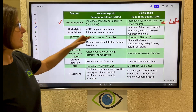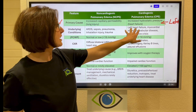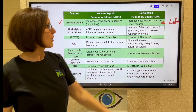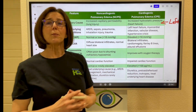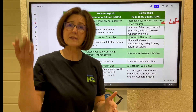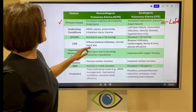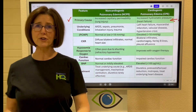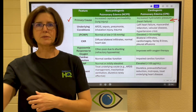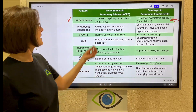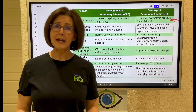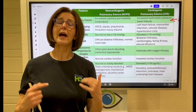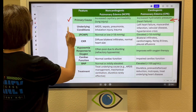For cardiogenic pulmonary edema, that hydrostatic pressure is caused by left heart failure — it can be due to a myocardial infarction, vascular disease, or prolonged hypertension causing the left ventricle to fail. For non-cardiogenic, that increased capillary permeability from lung injury involves disease processes like ARDS, sepsis (one of the main causes of ARDS), pneumonia, inhalation injuries, or traumatic chest wall injuries.